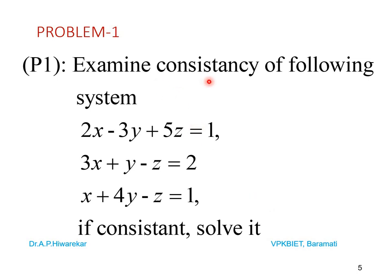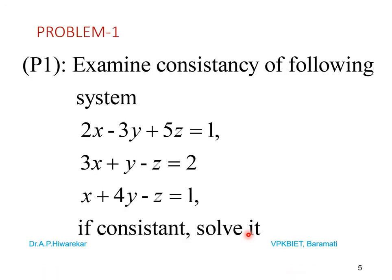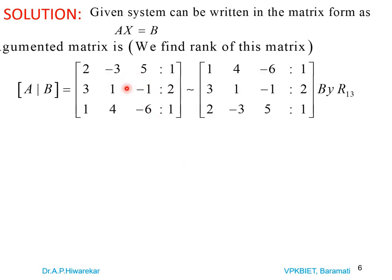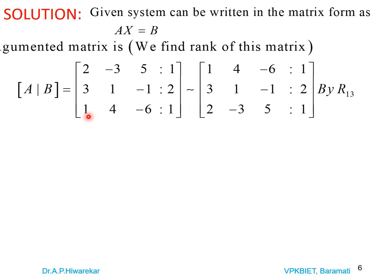Problem 1: Examine the consistency of the system 2x − 3y + 5z = 1, 3x + y − z = 2, and x + 4y − 6z = 1; if consistent, solve it. We write the augmented matrix A|b as: [2, −3, 5 | 1; 3, 1, −1 | 2; 1, 4, −6 | 1]. We need to find the rank by reducing to echelon form.